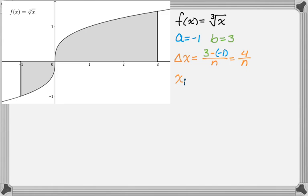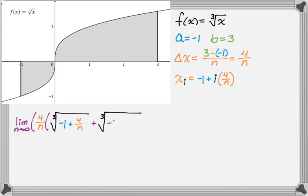My x sub i is always going to be a, where I'm starting, so negative 1, plus i times delta x, so i and then 4 over n. And then I can write the limit of the Riemann sum this time. So it's the limit as n approaches infinity. I'm going to put delta x, and then parentheses. And then the heights of all the rectangles are f of my x of i, so it's f of, and then if I let i equal 1, I get this, plus f of, if I let i equal 2, I would get this. And then I'm going to do plus dot dot dot, plus, I want the nth term, so the cube root of negative 1 plus n times 4 over n.